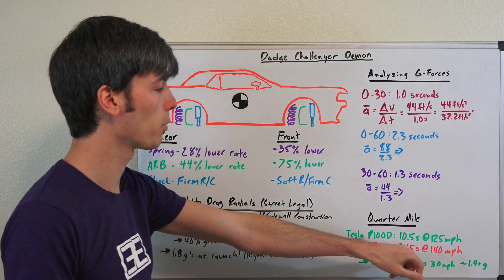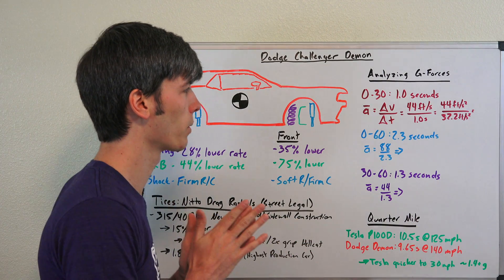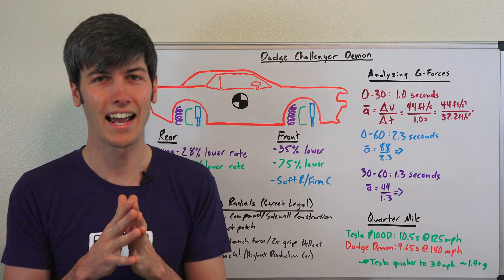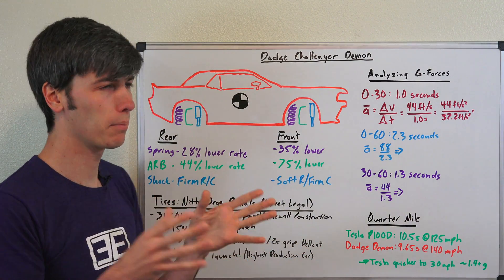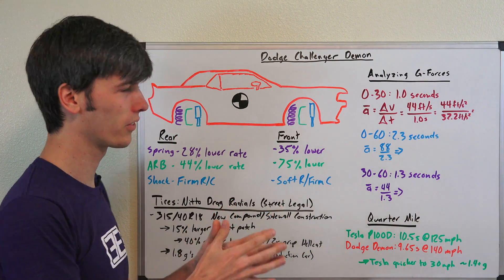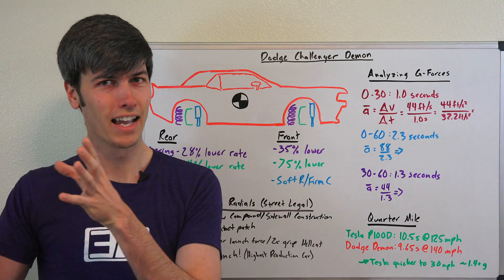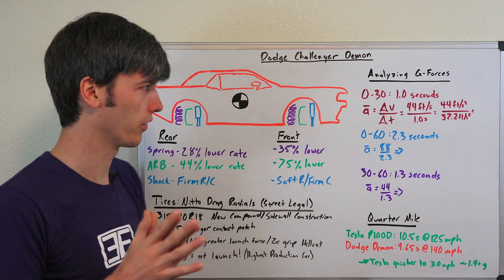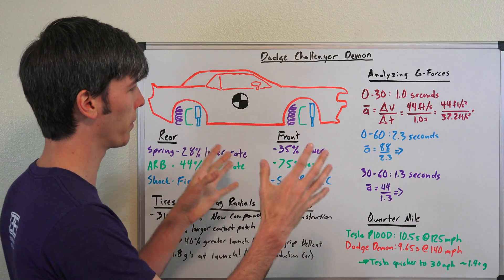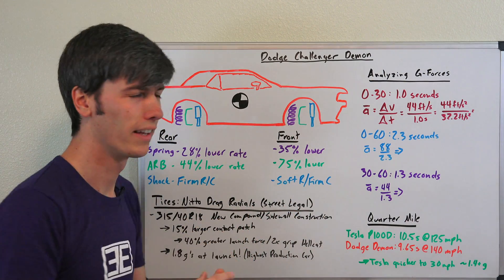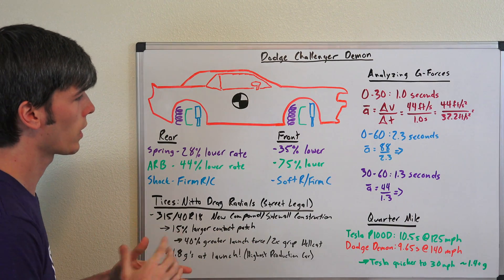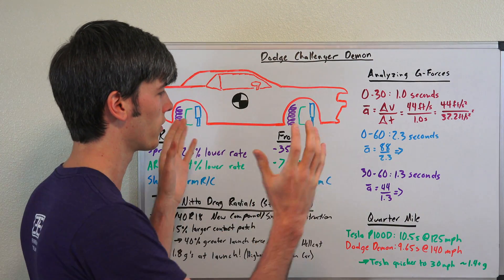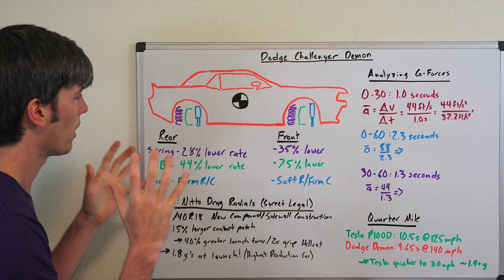And that's what it did. It hit a quarter mile time of 9.65 seconds at 140 miles per hour. It was designed as a drag strip car, not as a track car. So of course it's not designed and going to excel well in other areas. Its pure purpose is to be a drag strip car. They have the Dodge Viper for the track car. This is designed as a drag car.